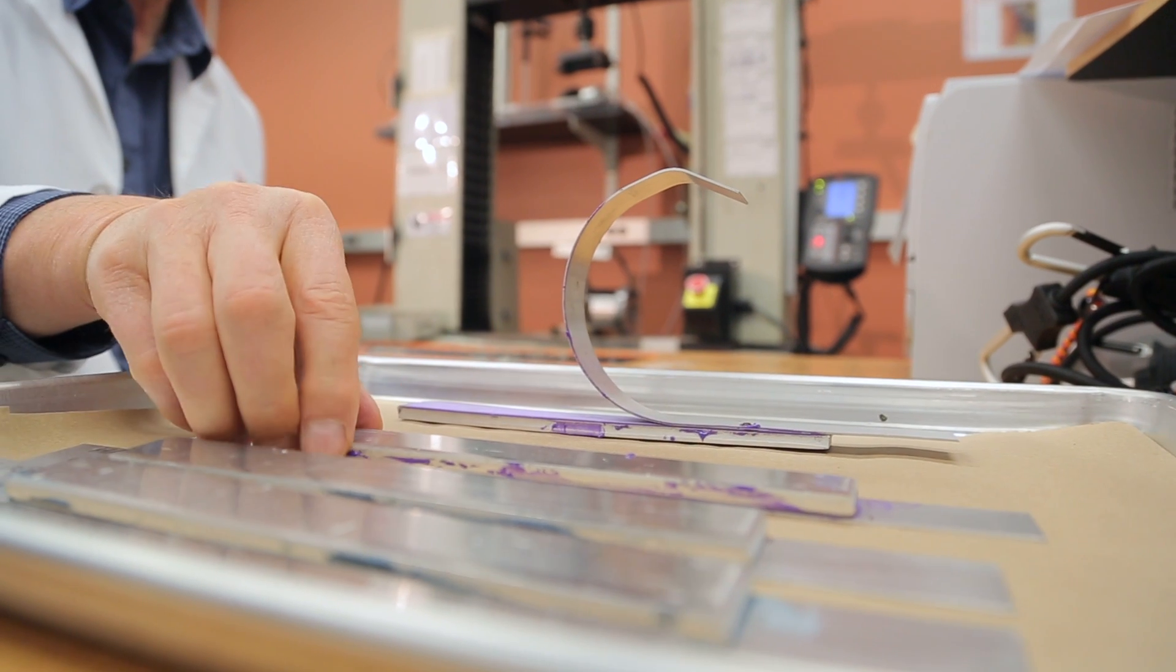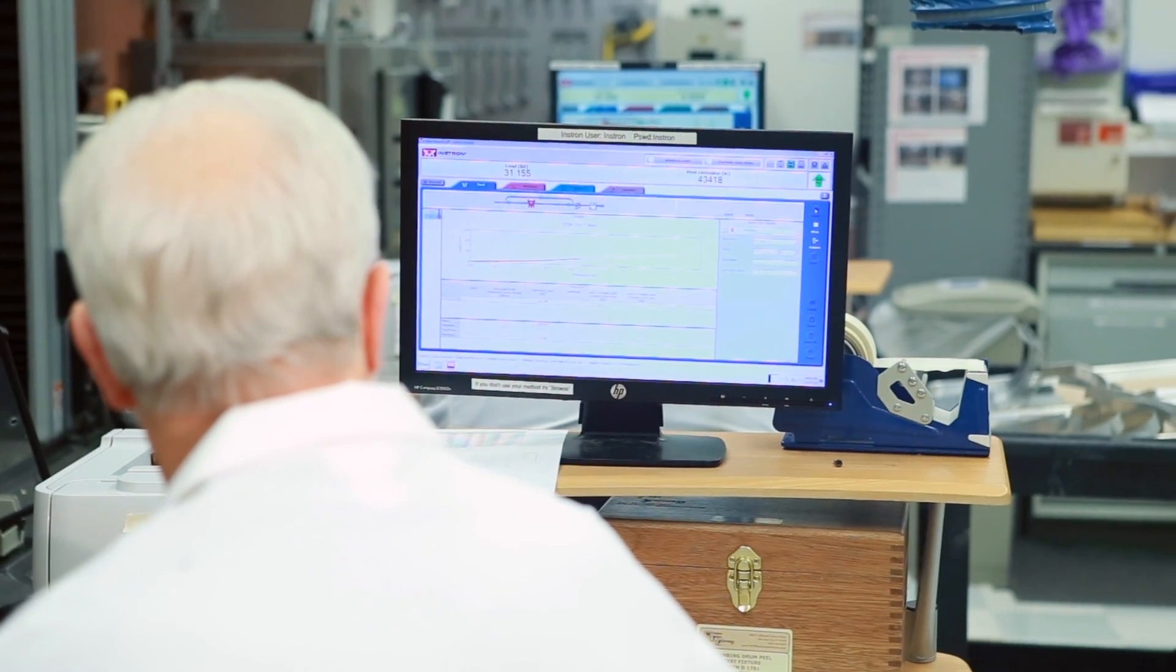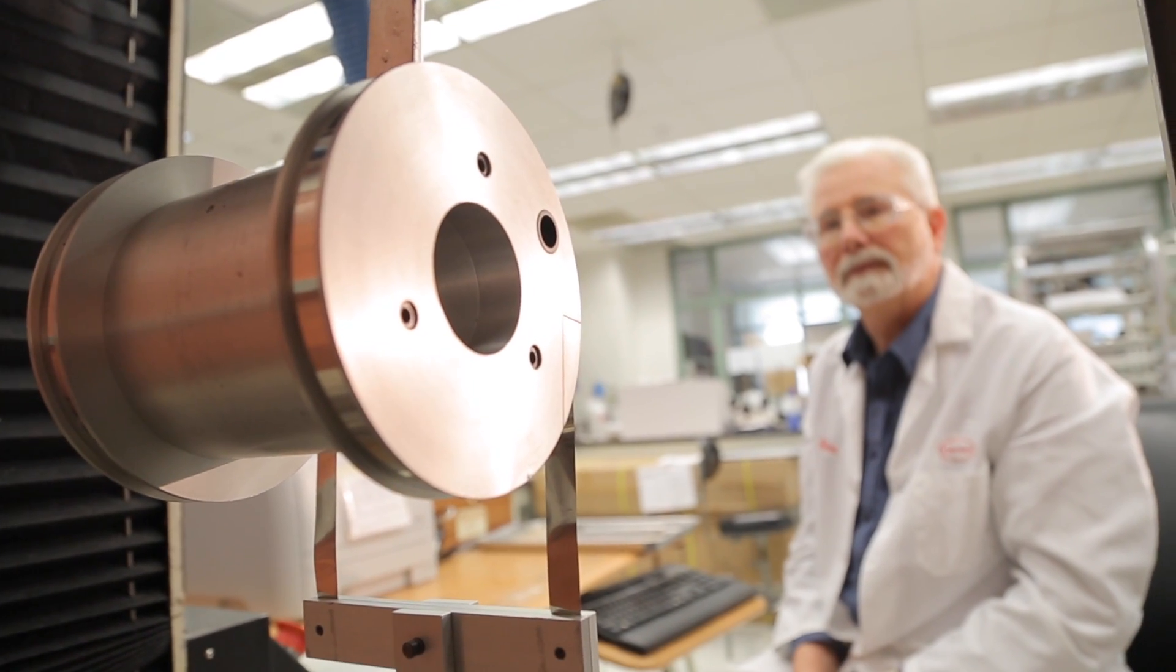When designing a bonded assembly, these loads should be avoided as much as possible. One method, called the climbing drum peel test, allows for calculation of an adhesive's peel strength independent of the substrate it is bonded to.